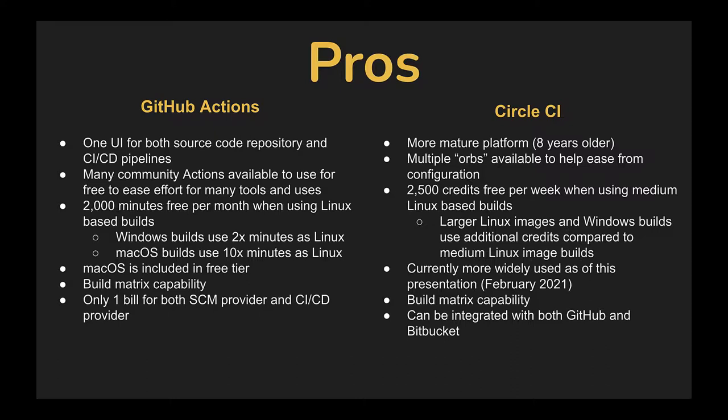GitHub Actions does offer Windows and macOS builds, but they use more additional minutes per build minute than Linux. Windows uses two times as many minutes and macOS uses ten times as many minutes as Linux, so keep that in mind. They also have the build matrix capability. If you're on the GitHub free plan you get 2,000 build minutes a month, or on a paid plan you get at least 3,000 minutes per month included. GitHub Actions is already included in your GitHub Pro or paid plans, so you only have one bill and one website for both source code and CI/CD.